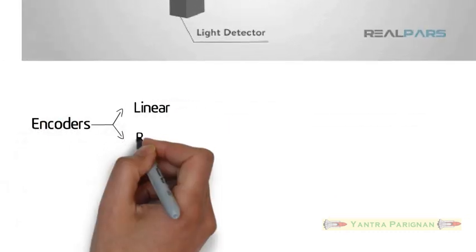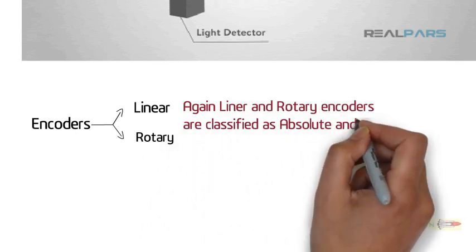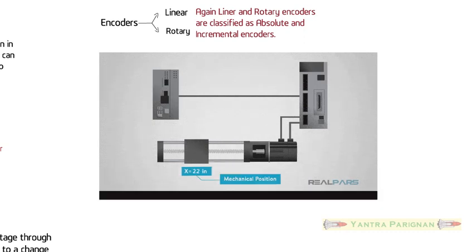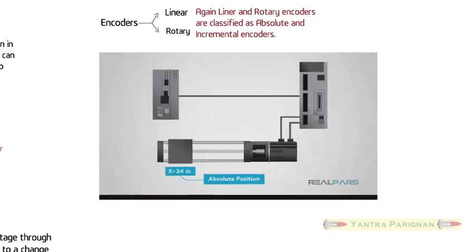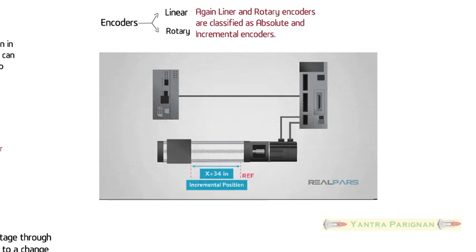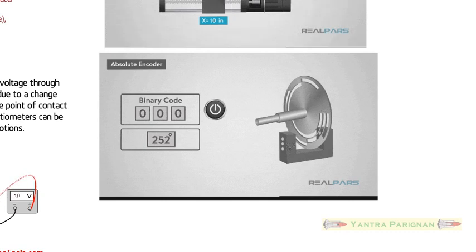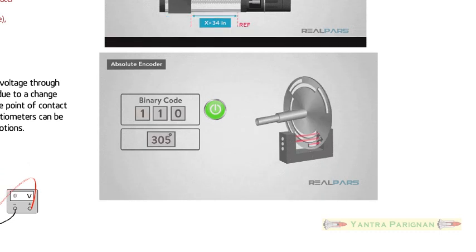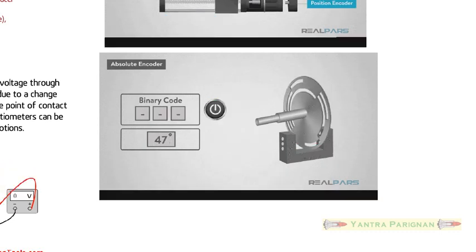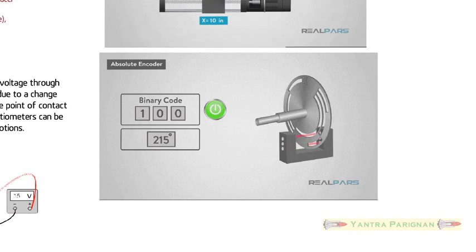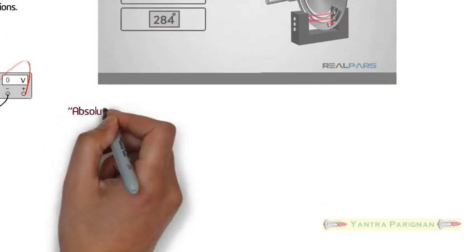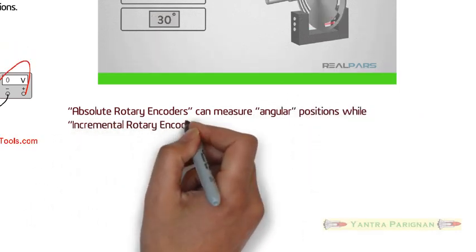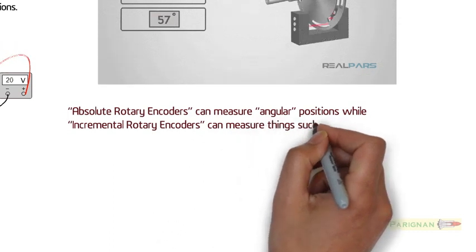Encoders are basically classified as linear and rotary type and again classified as absolute and incremental encoders. Animation shows an example of where a linear encoder is used for a CNC milling machine where precise movement measurements are required for accuracy in manufacturing. Animation showing that when the shaft rotates, a unique code pattern is produced. This means that each position of the shaft has a pattern and this pattern is used to determine the exact position. Absolute rotary encoders can measure angular positions while incremental rotary encoders can measure things such as distance, speed, and position.